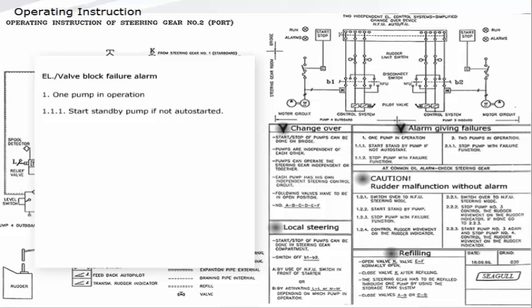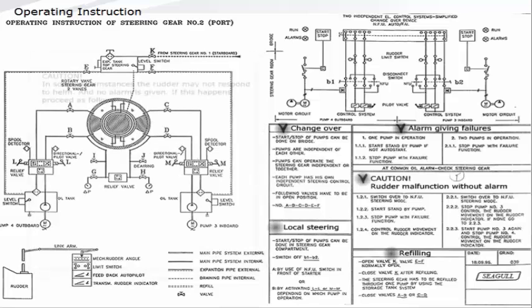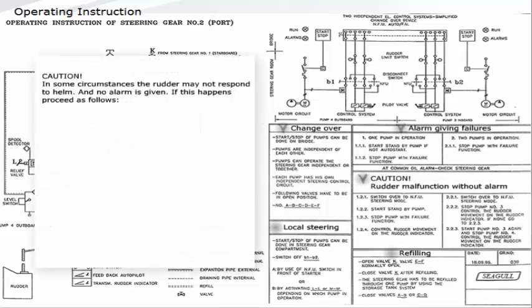Electrical or valve block failure alarm: 1.1 pump in operation - start standby pump if not auto-started, stop pump with failure function. 2.2 pumps in operation - stop pump with failure function. Caution: In some circumstances the rudder may not respond to helm and no alarm is given.